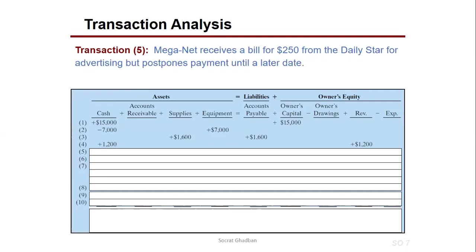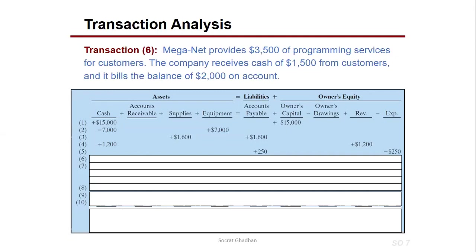Transaction 5: MEGANET receives a bill for $250 from the Daily Star for advertising but postpones payment until a later date. We used the service so it's an expense, but since we didn't pay yet, it's a liability — accounts payable. On one side we have plus $250 in expenses and minus $250 in owner's equity, so the equality is maintained.